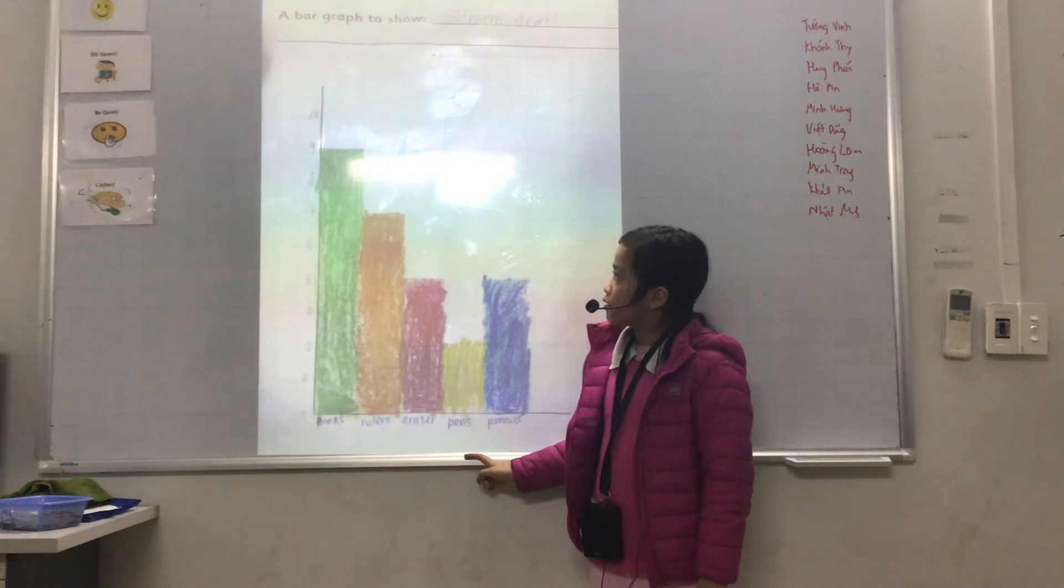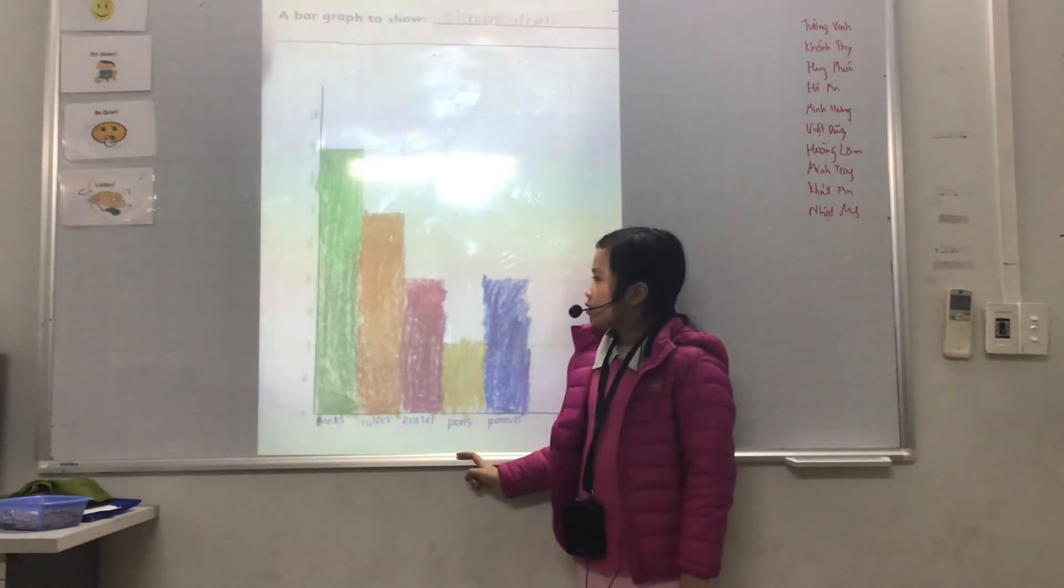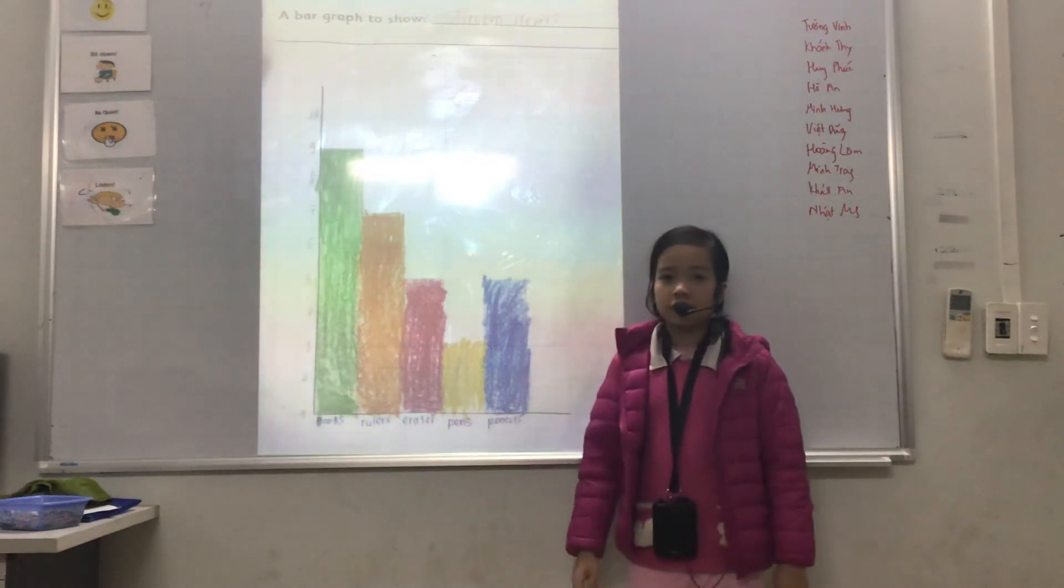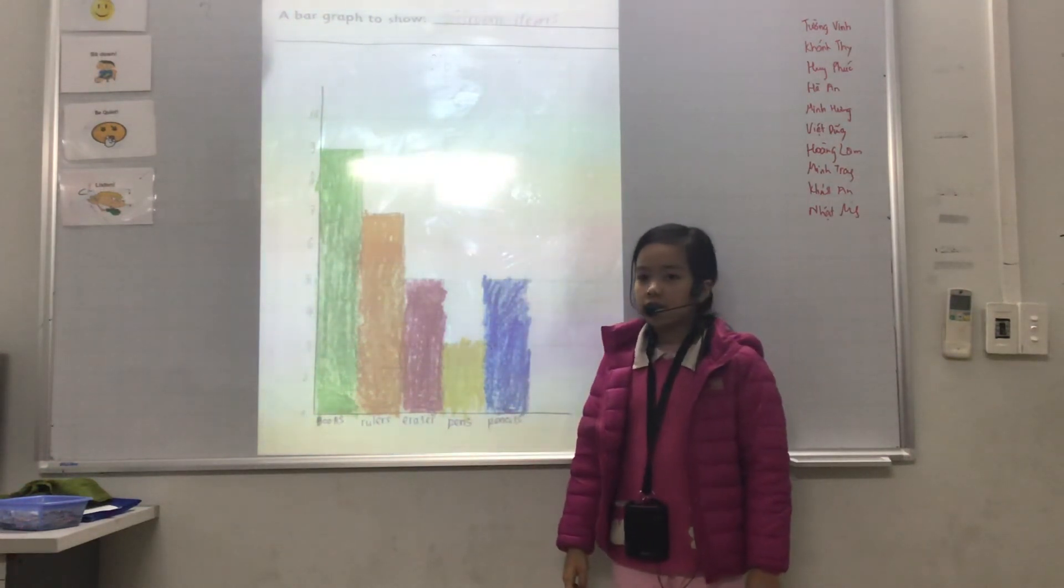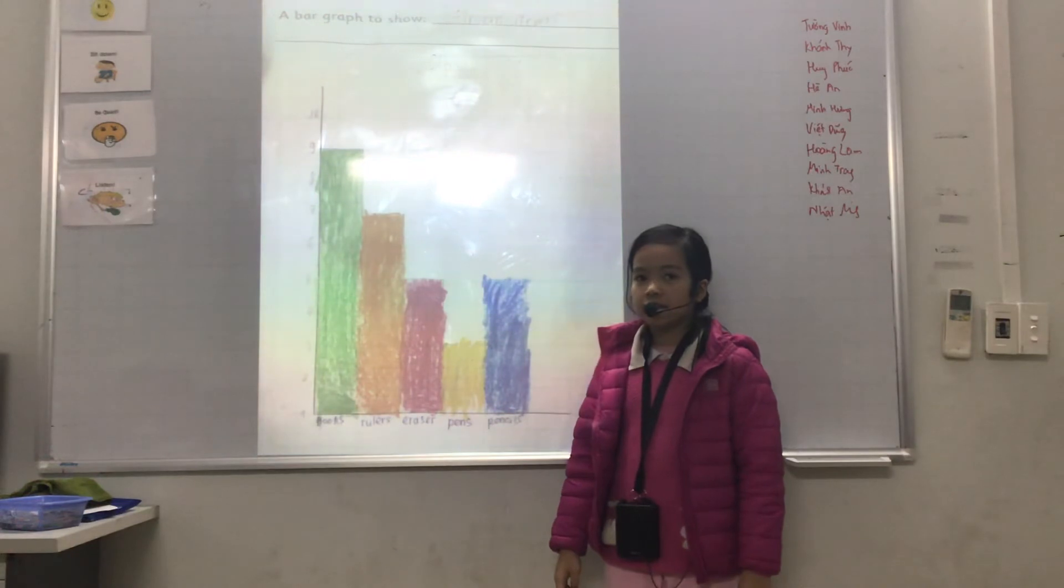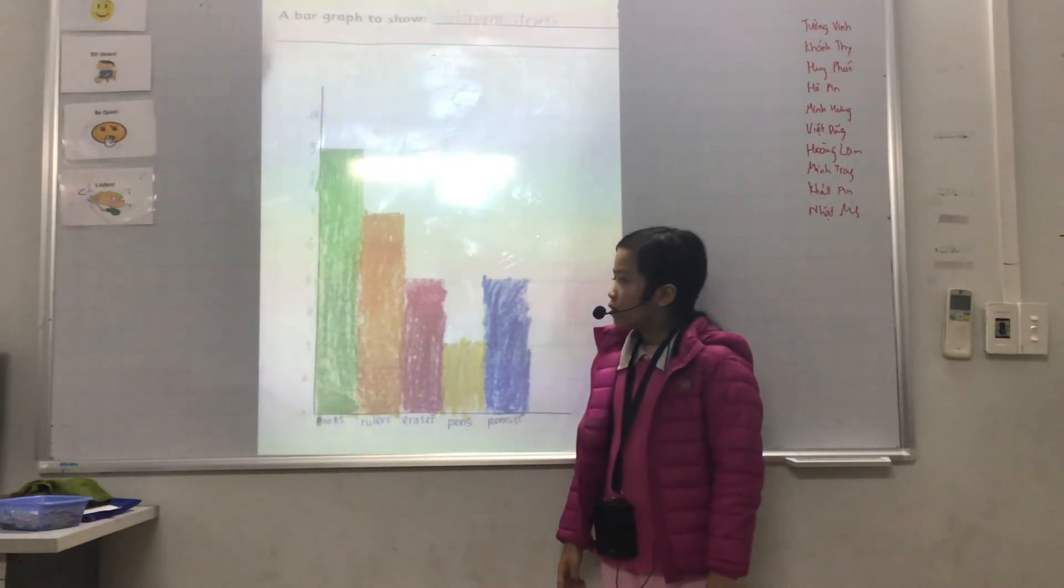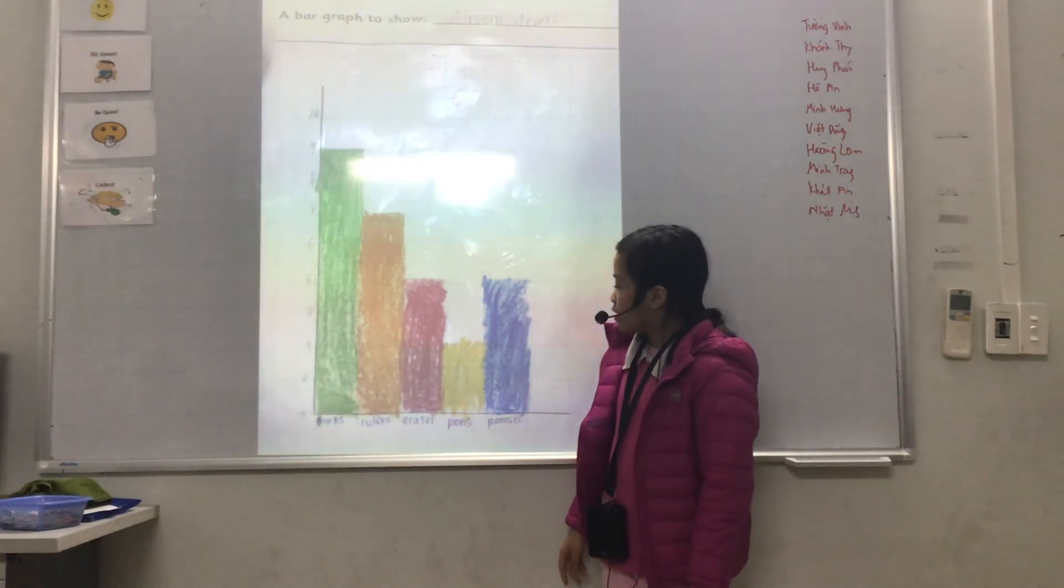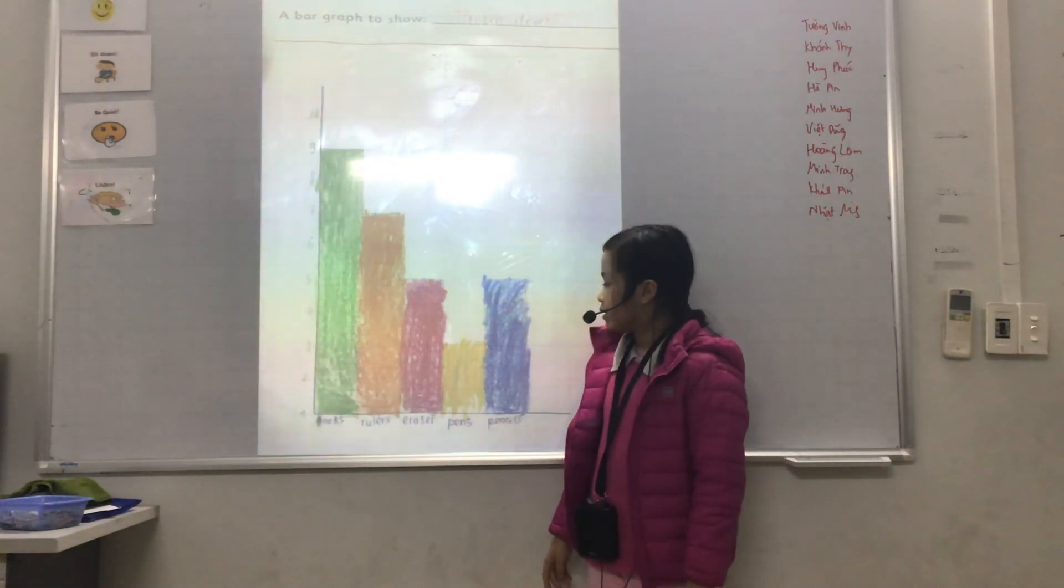It is 9. The difference between the least and the greatest is 6 because 9 minus 3 is 6.